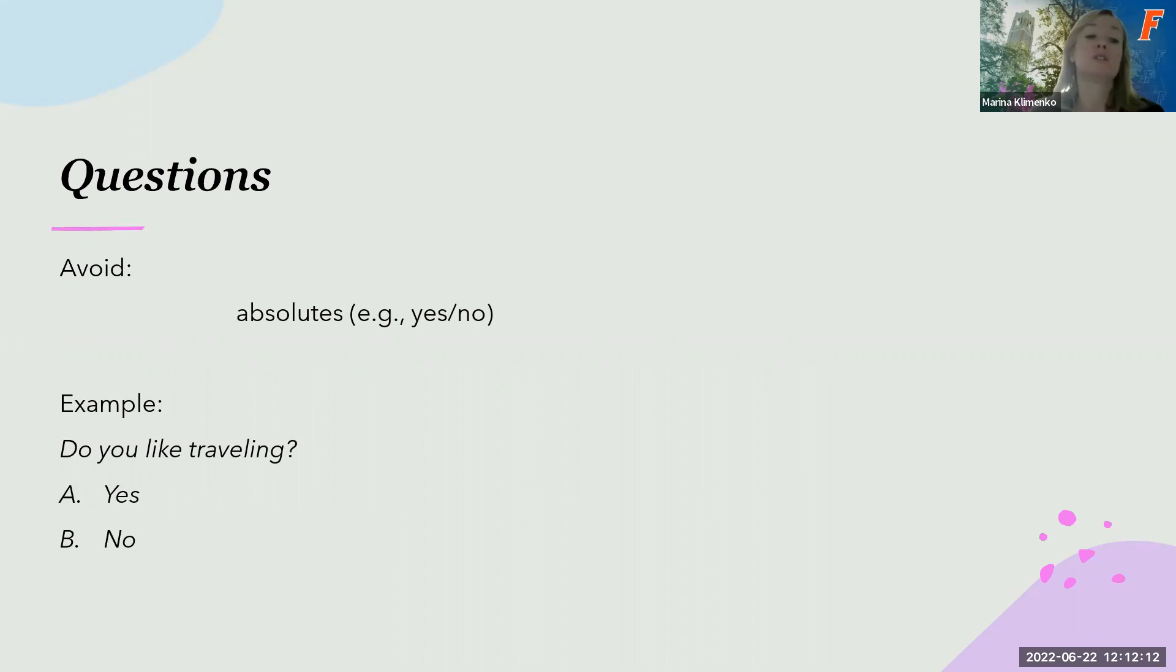Typically, absolute yes-no questions are not ideal. Do you like traveling, yes or no? A lot of answers can be easier to answer if you give people degrees or options, multiple options. It's never completely no or never completely yes. Perhaps a more accurate answer would be some degree, to what degree you like traveling, how much do you like traveling.